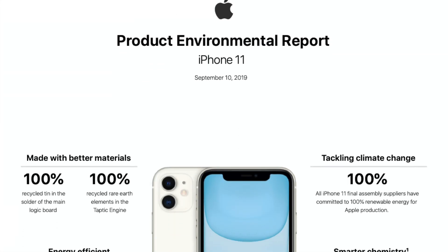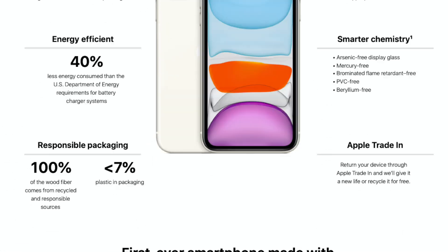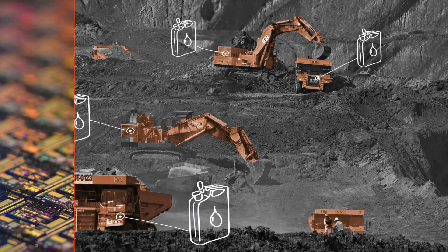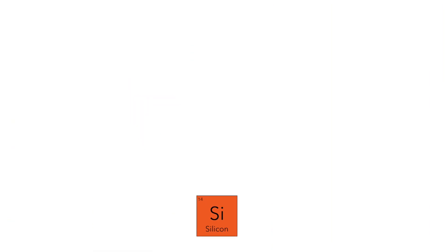The environmental report for the iPhone 11 claims that the final assembly is done with 100% renewable energy, using hydroelectricity. That's great, but what about the energy to extract the materials and create the components before assembly?